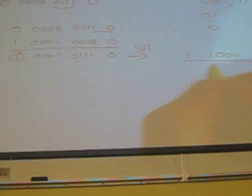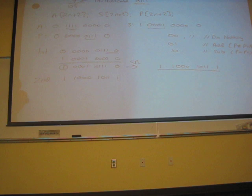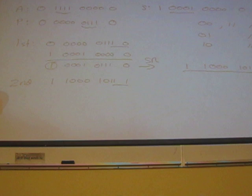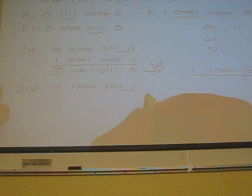So for our second iteration, we start with this value. And the last two bits are 1, 1, so what are we going to do? Nothing.